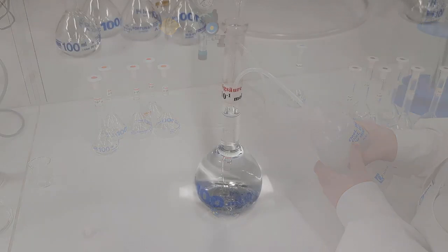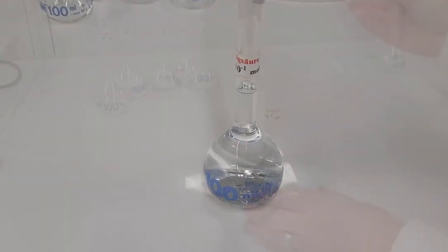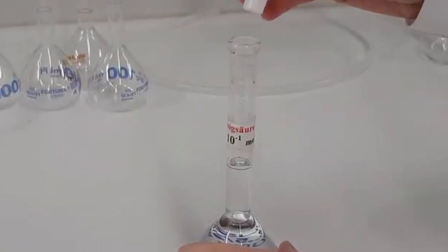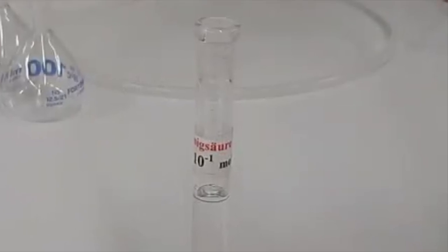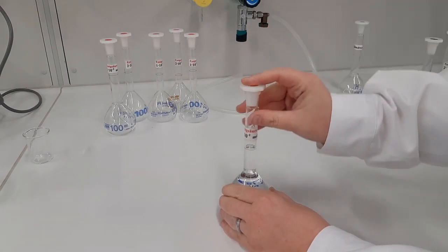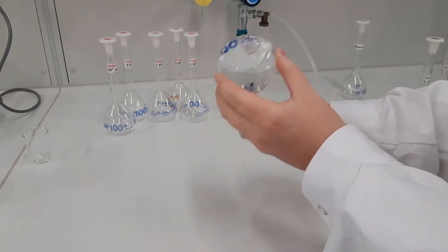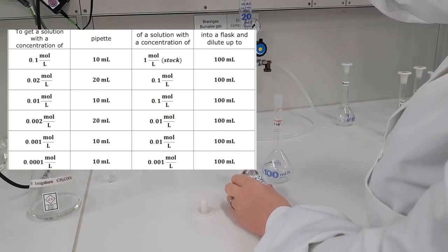To get reproducible results, the volumetric flasks always have to be filled exactly up to their graduation marking with distilled water. Do not mix up the stoppers of the flasks. The solution process has to be carried out exactly in the order given in the handout.